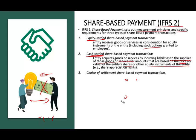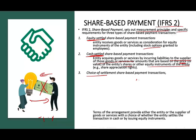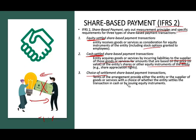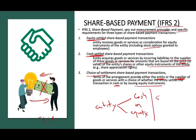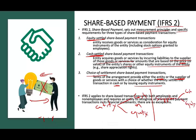The third share-based payment plan is a choice of share-based payment. It means you could either settle it in cash or you can settle it in equity. The terms of the arrangement provide either the entity or the supplier with the choice of whether the entity settles the transaction in cash or by issuing stocks. Either the entity can choose the form of payment or the supplier can choose — settle in cash or settle in equity.